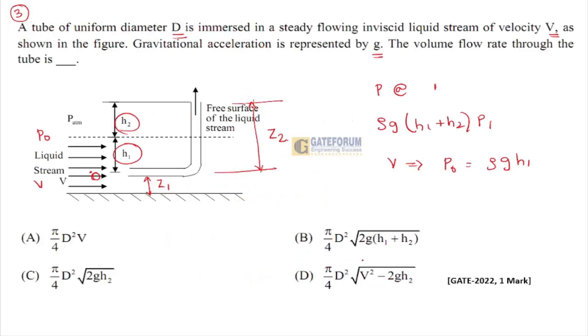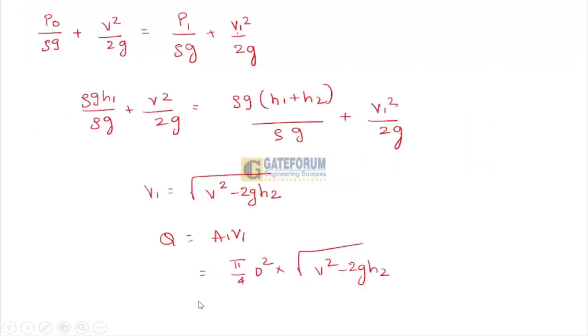This is a straightforward application of Bernoulli's equation. The volume flow rate is Q = (π/4)d² × √(v² - 2g·h2), which is option C — the right answer for the given question.